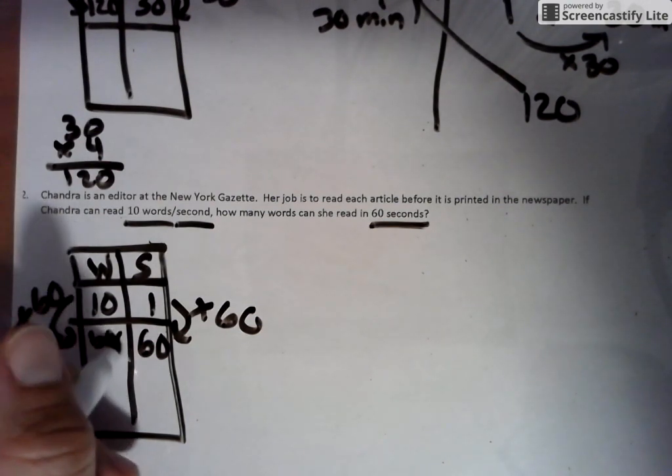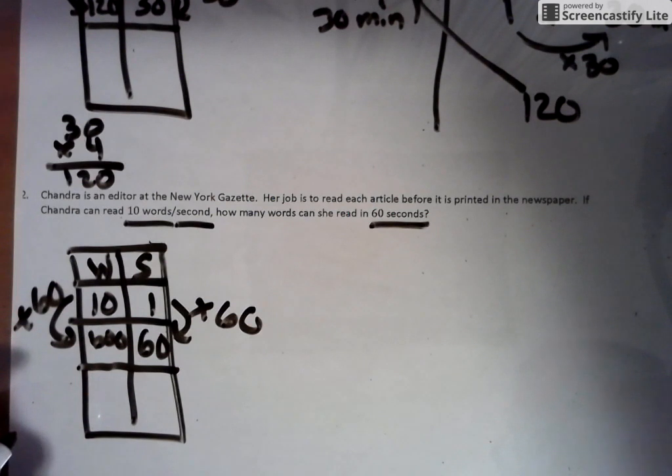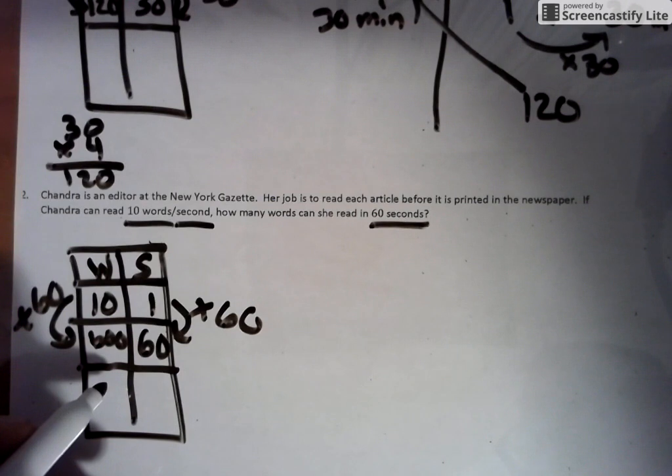So if we were to go the root of the chart, because some people really do like that chart, we have words and seconds, 10 words, one second. If we have to get to 60 seconds, what do we do? We multiply by 60, do it to this, multiply by 60.